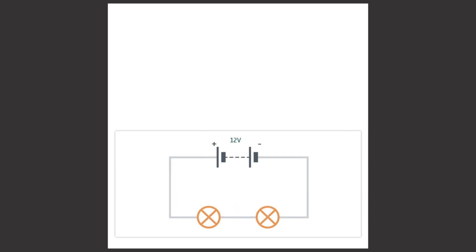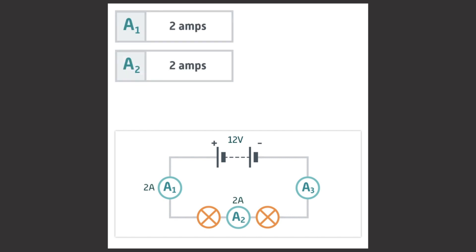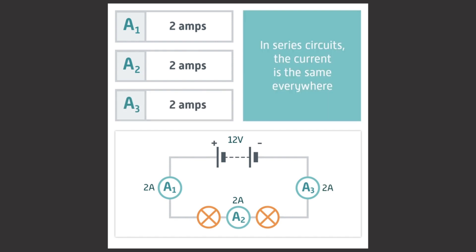Imagine you have set up a circuit containing a 12 volt power supply and two lamps in series. Now we add ammeters A1, A2 and A3 in the positions shown: A1 before the lamps, A2 between the lamps, and A3 after the lamps. We can take readings from each ammeter. Examples of current readings you may get are A1 equals 2 amps, A2 equals 2 amps and A3 equals 2 amps. We find that in a series circuit, the current is the same everywhere.